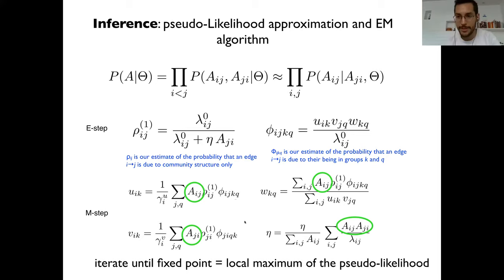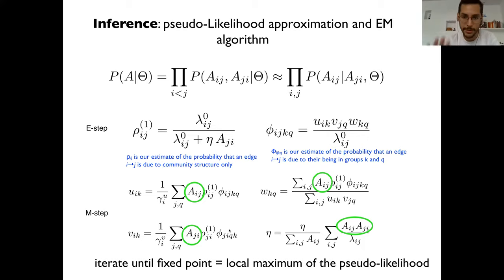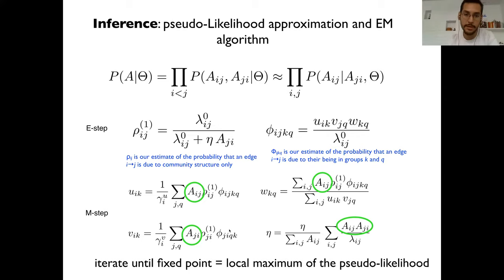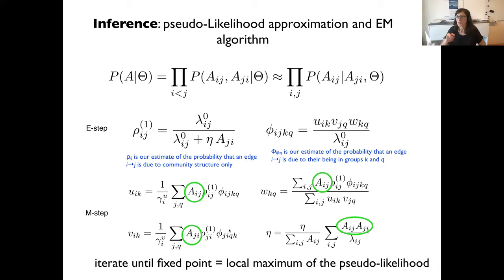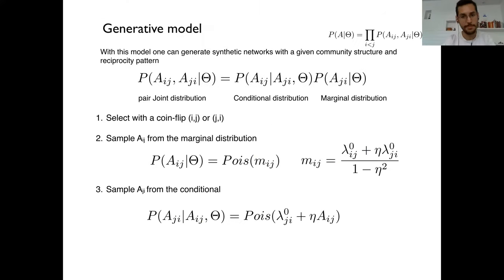There was a question from Michele: how does this relate to previous work on multilayer networks, and can you use this so that an A_{ij} link in layer A gets reciprocated with a A_{ji} edge in layer B? That's a great question — it will come at the end, as it connects to generalizing reciprocity for multilayer networks.